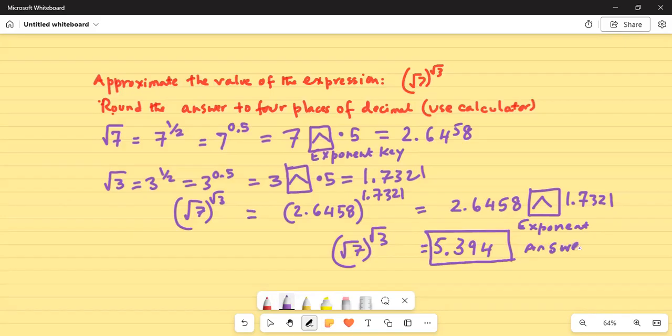So I wanted to give you an important tip. The tip is that looking at the problem you cannot do it without using the calculator. So it's best to find out what is square root of 7 up to 4 places of decimal and what is square root of 3 up to 4 places of decimal. Once you found the square root of 7 which is 2.6458, press the exponent key in the calculator and you raise it to the power of square root of 3 which is 1.7321. Hence the final answer is 5.394.